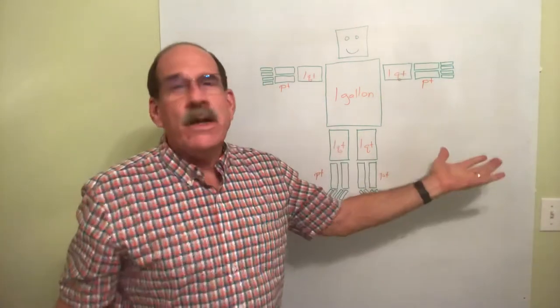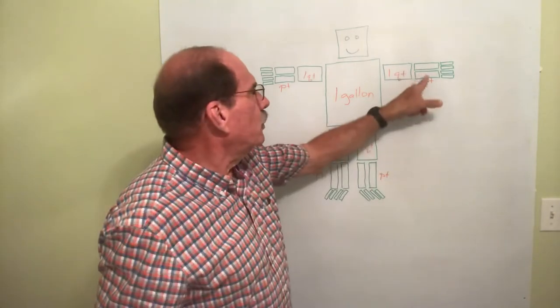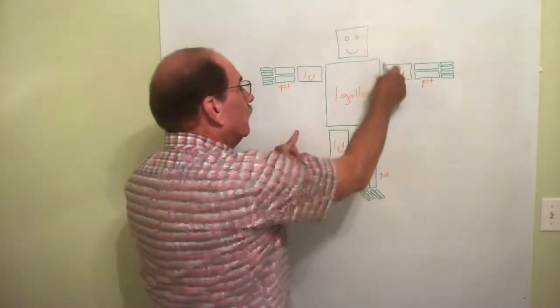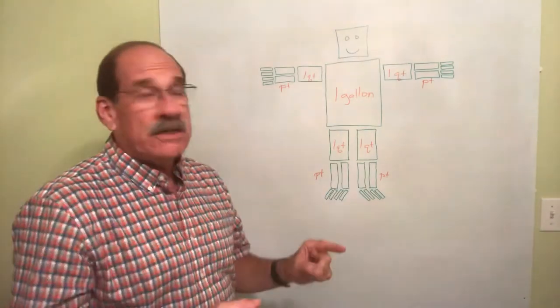So, there, this is a quick thing to look at and say, oh, there are two pints in a quart. There are one, two, three, four, four quarts in a gallon. Let's keep going.